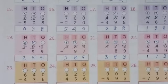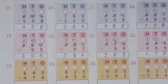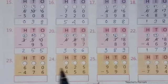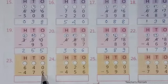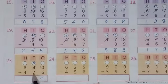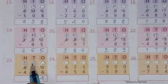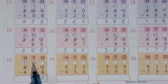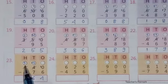See the next question number 23. Here 0 minus 6 is not possible, so borrow from this digit — this will become 3 and here will be 10. Now 10 minus 6 equals 4. Then 3 minus 7 is not possible, so borrow from this digit — this will become 5 and here will be 13. Now 13 minus 7 equals 6. 5 minus 4 equals 1.